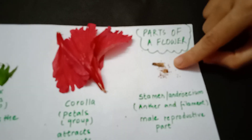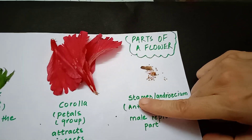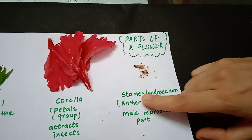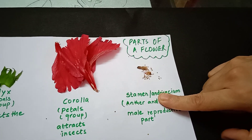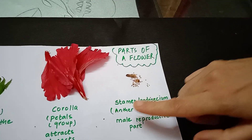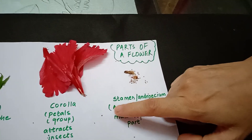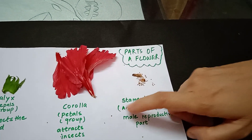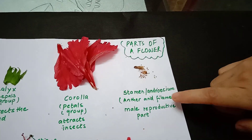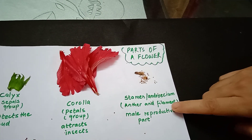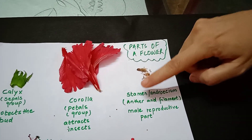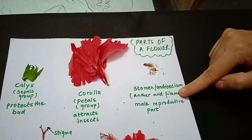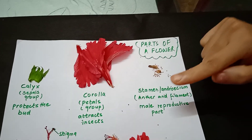To remember the stamen, notice it contains 'men' — so it's easy to recall it's the male reproductive part. 'Andro' also relates to males. In 'anther', placing 'm' before it gives 'manther', and 'filament' also contains 'men'. So stamen, anther, and filament all relate to the male reproductive part — the third whorl of the flower.